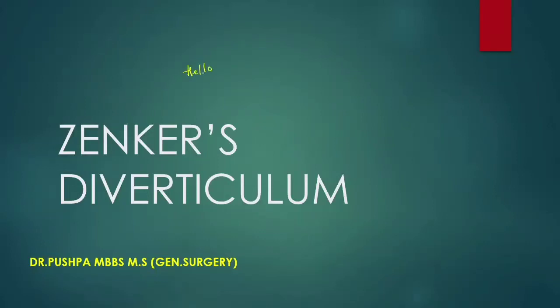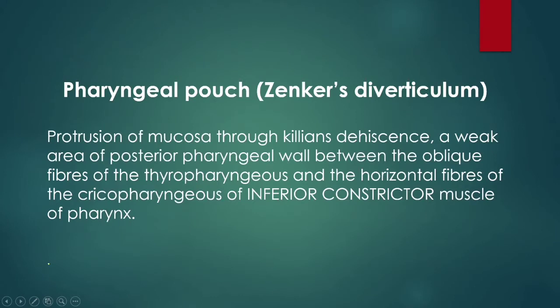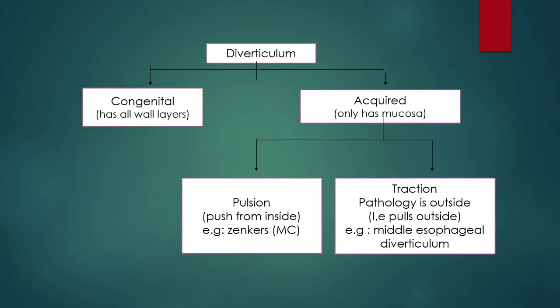Hello friends, let us discuss a small topic — Zenker's diverticulum, also called pharyngeal pouch. This is a protrusion of mucosa through Killian's dehiscence. Killian's dehiscence is a weak area of the posterior pharyngeal wall between the oblique fibers of thyropharyngeus and horizontal fibers of cricopharyngeus of the inferior constrictor muscle. There are classifications like congenital and acquired diverticulum.